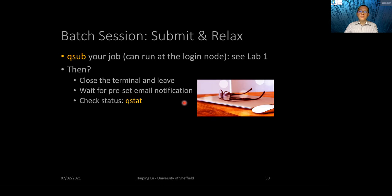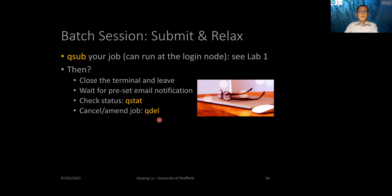If you want to check the status before receiving an email, you can log in and type QStatus. If you want to kill a job — for example, it has been running for one or two days and something seems wrong — you can open the output file, which is constantly updated, and observe intermediate results. Then you can delete your job using QDelete, because it's taking up shared resources.